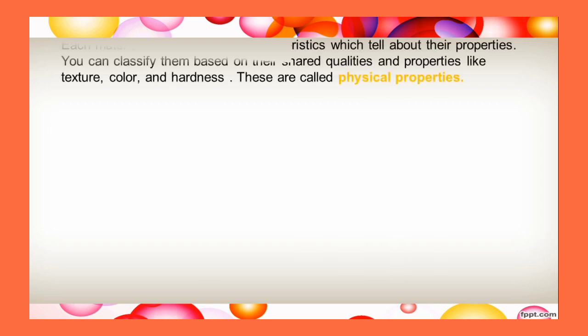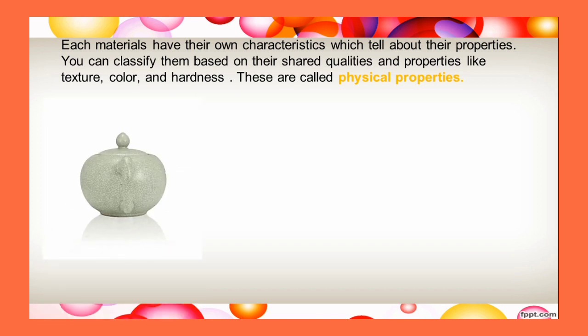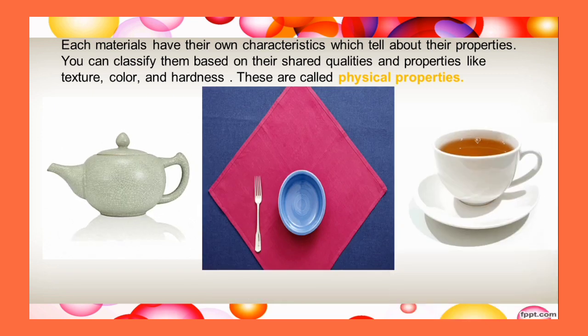Each material has its own characteristics which tell about its properties. You can classify them based on their shared qualities and properties like texture, color, and hardness. These are called physical properties.